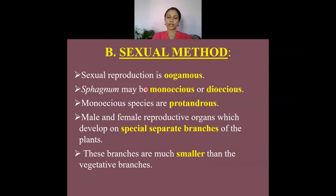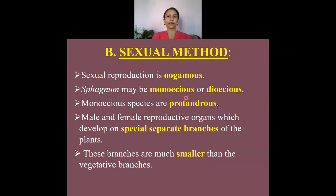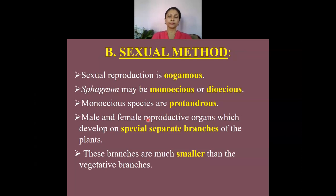The sexual method of reproduction in Sphagnum is oogamous. It may be monoecious or dioecious, meaning the sex organs may be borne on a single plant body or on two different plant bodies. If monoecious, they are protandrous, meaning the male sex organs are produced earlier than the female sex organs.